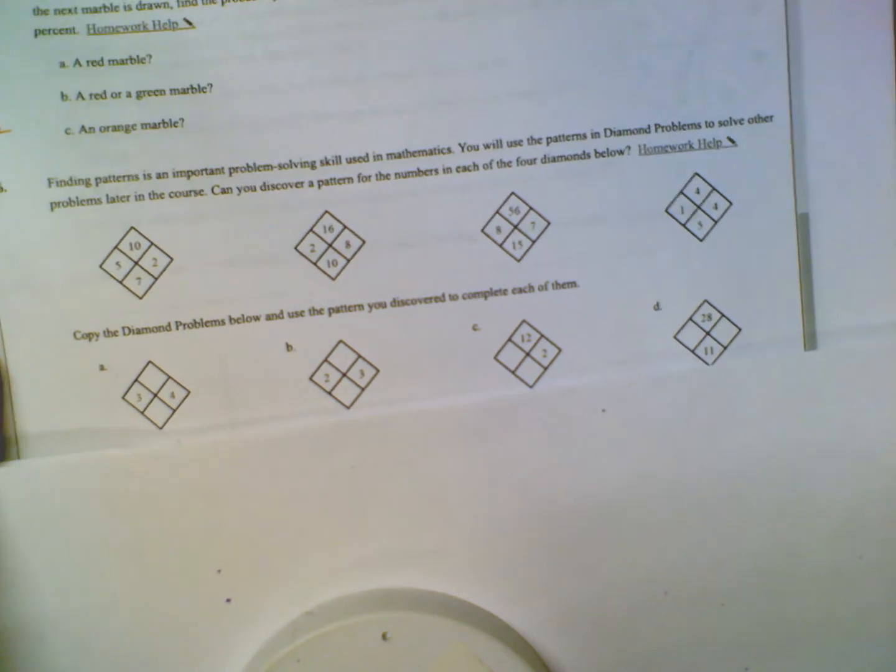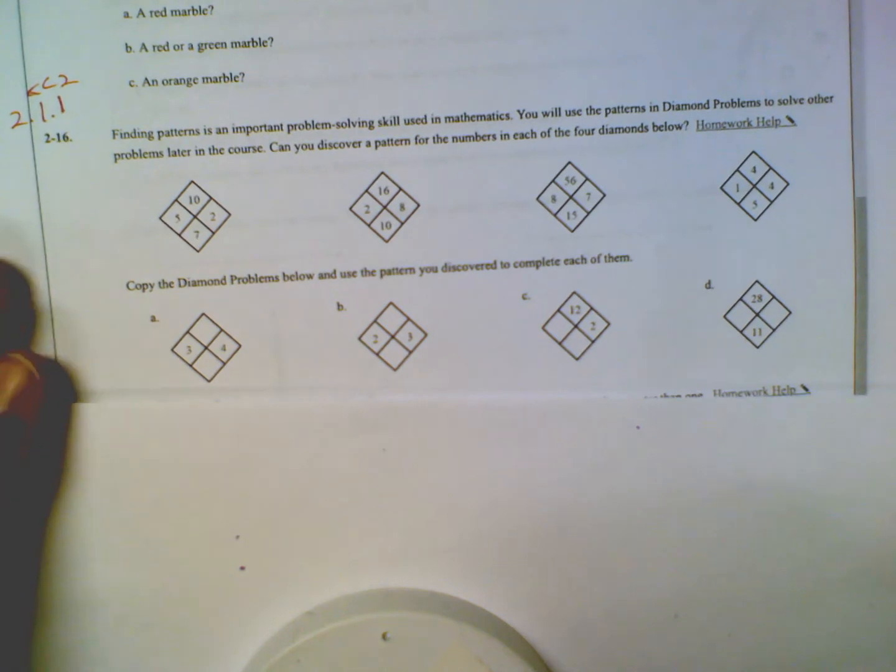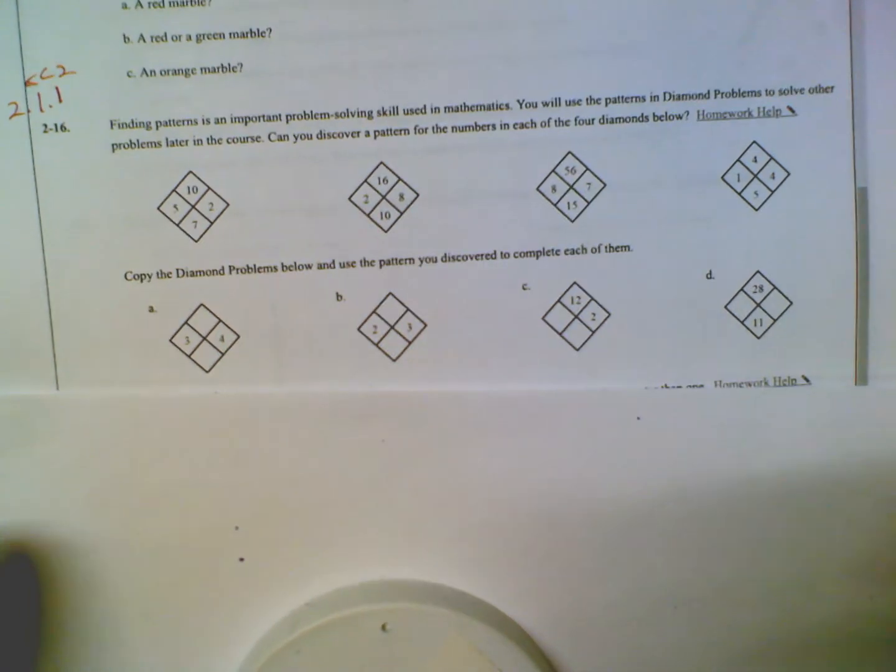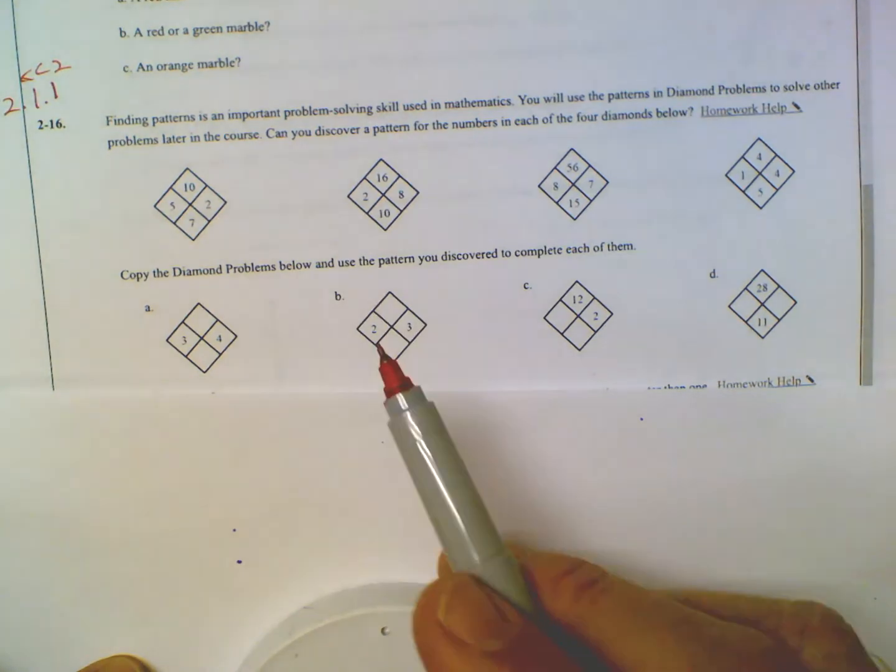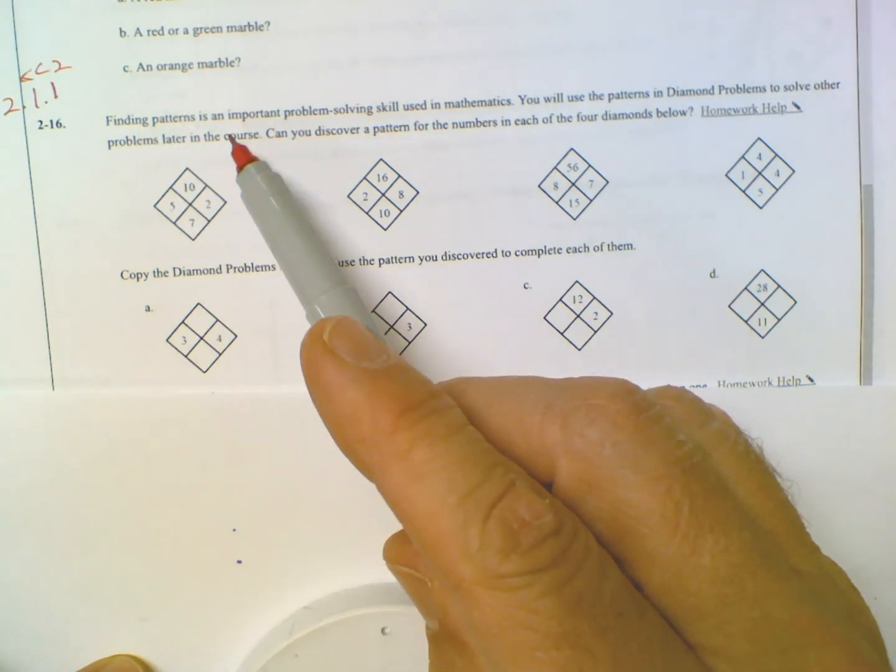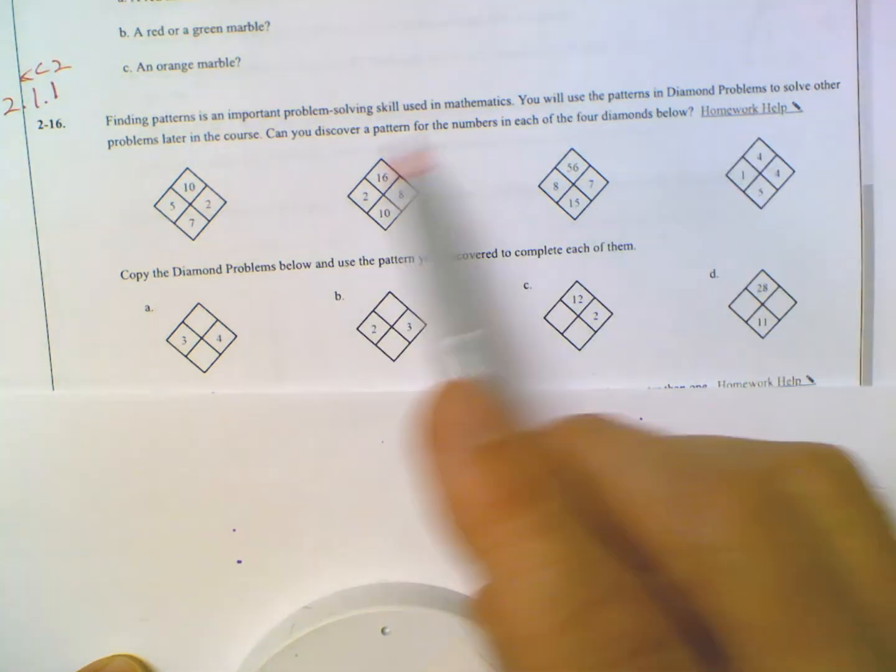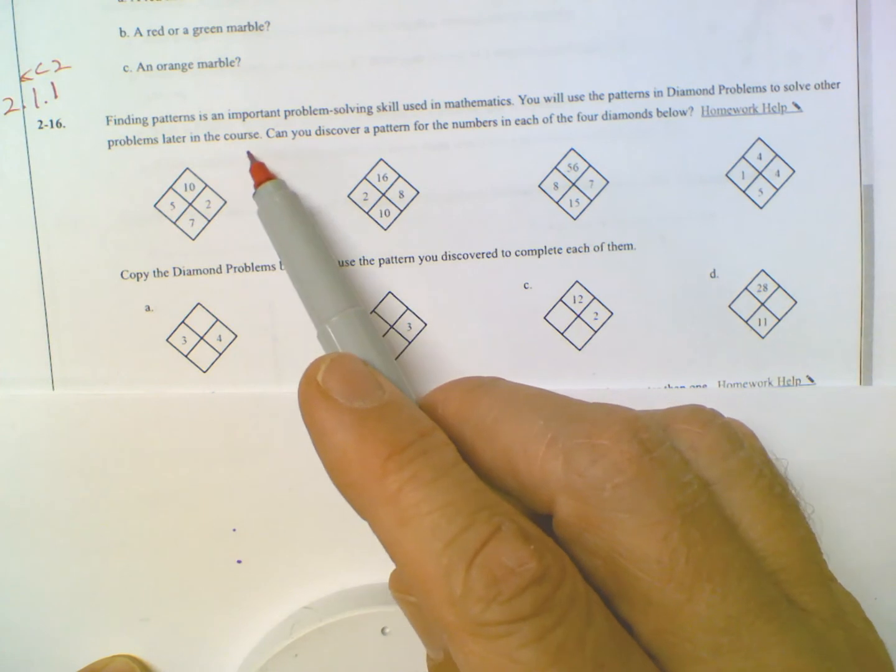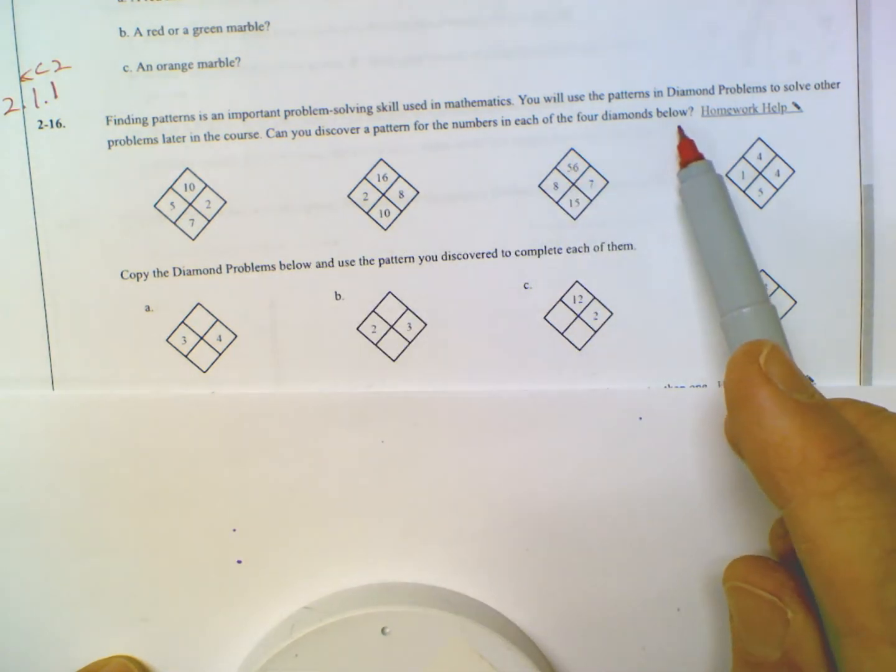So we are looking at what we call diamond problems in this textbook. This textbook refers to these as diamond problems and an introduction to them at seventh grade, and then we heavily use them in eighth grade. So the first thing is it says to find the patterns, right? Finding patterns is an important problem solving skill used in mathematics. You will use the patterns in diamond problems to solve other problems later in this course. Can you discover a pattern for the problems in each of the four diamond problems below?